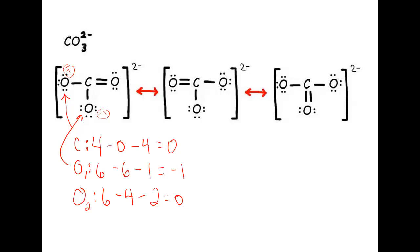In the second structure, carbon is bonded in the same exact way as in the first structure, so it has a formal charge of zero. The double-bonded O has four dots and two dashes, so it also has a formal charge of zero. The single-bonded oxygens are bonded exactly like those in the first structure — each has six dots and one dash — so they're each going to have a formal charge of negative one. The same applies to the third structure: carbon and the double-bonded O have formal charges of zero, and the single-bonded oxygens have formal charges of negative one.